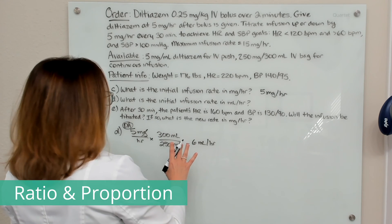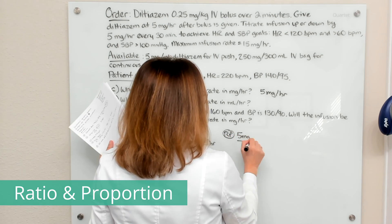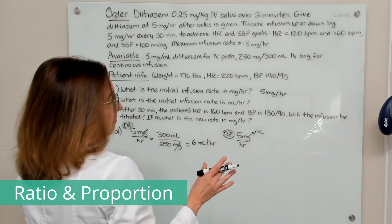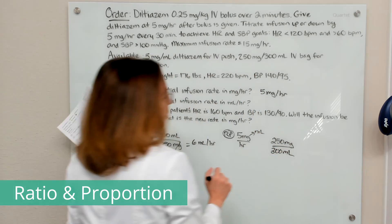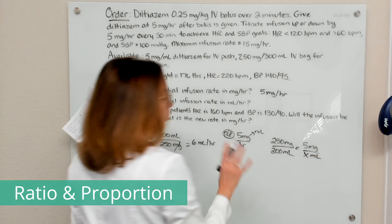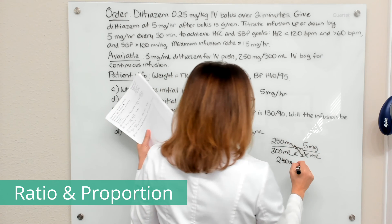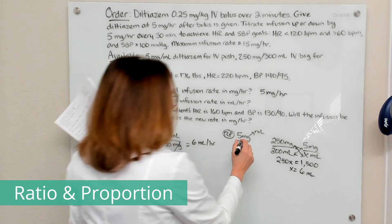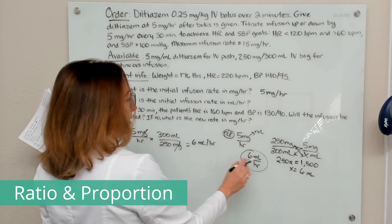Using ratio and proportion for Part D: we know we want to give this medication at 5 milligrams per hour but need to figure out how many milliliters that is. On one side of the equation I put the known ratio — our available concentration of 250 milligrams in 300 mL — and on the other side I put 5 milligrams and X for the mL. Cross-multiplying gives 250X equals 1500, and solving for X gives 6 milliliters per hour.